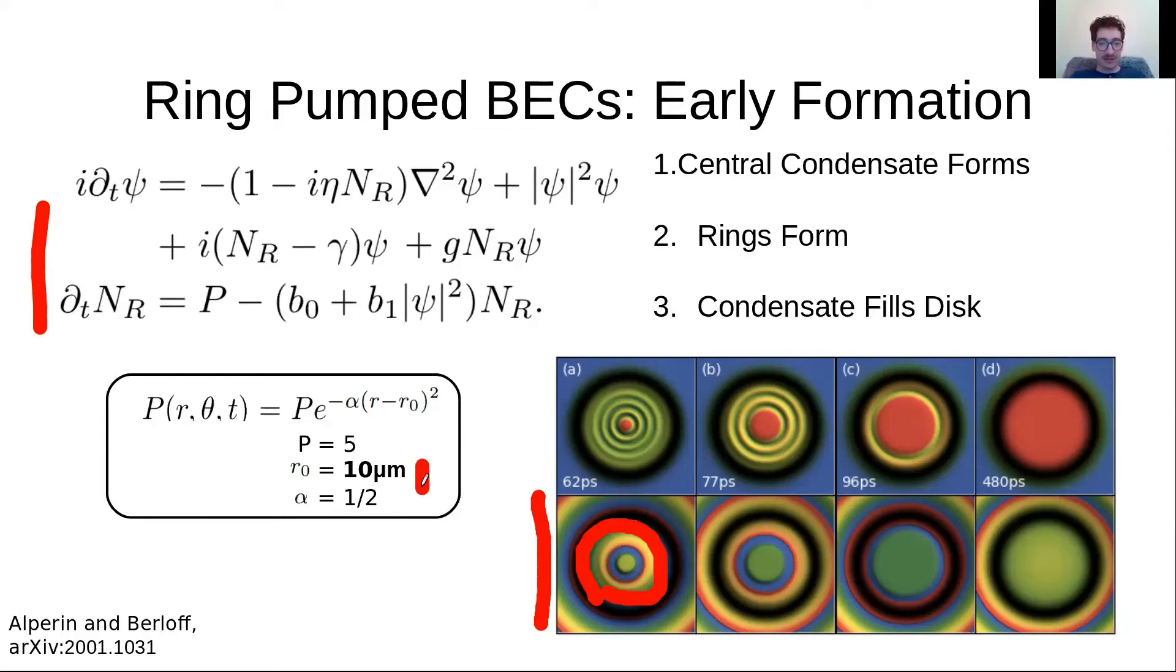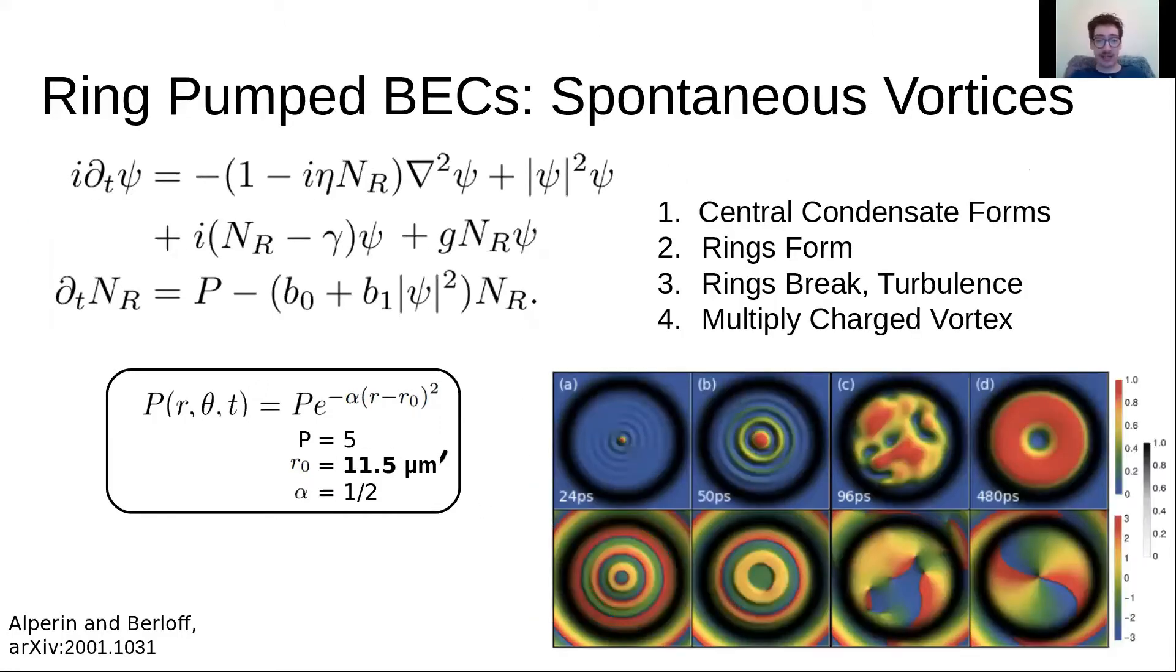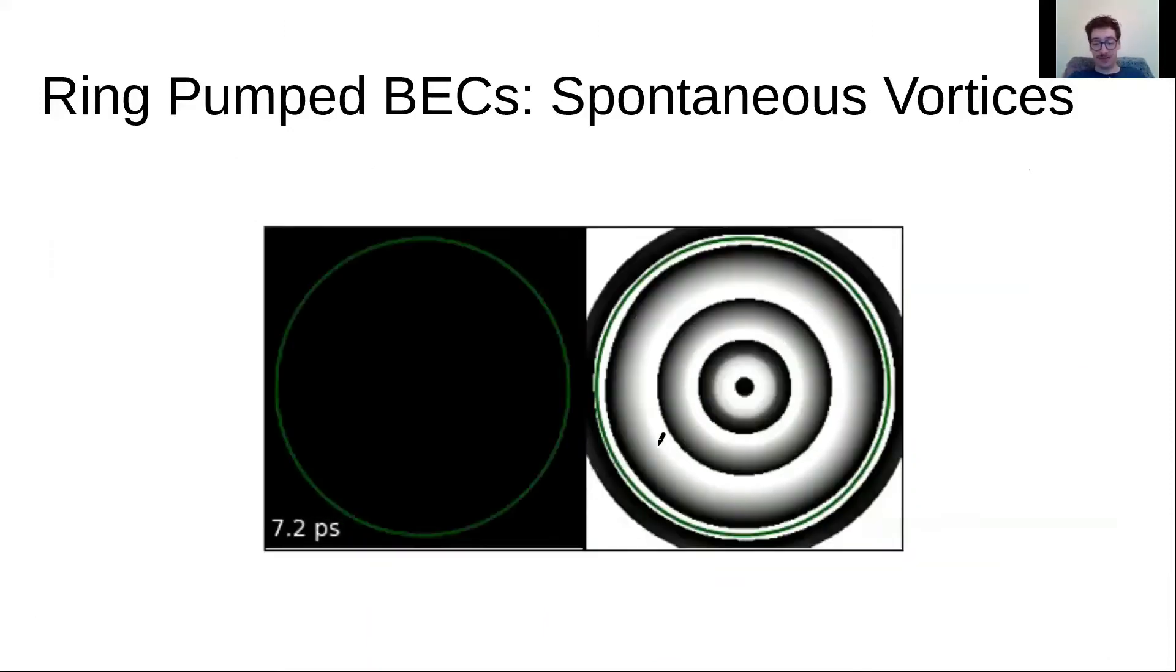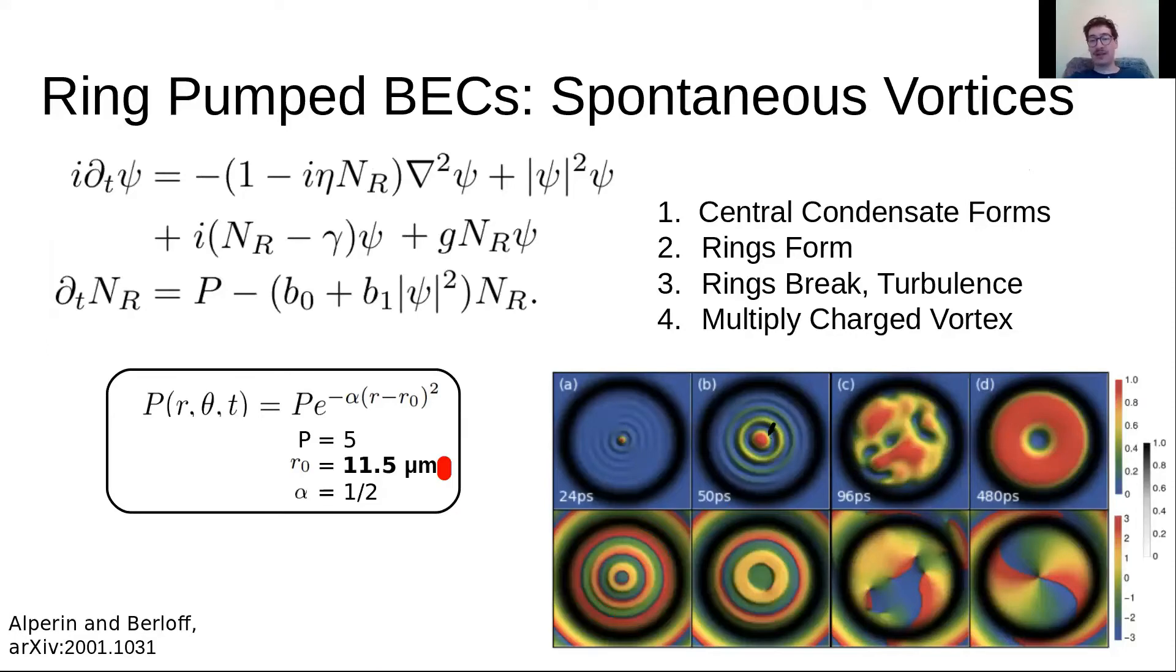Here we have a 10 micron pump radius, and so just by expanding that a little bit we can see if that causes the condensation to take a little bit longer to form, so we can maybe see these dynamics. As it turns out, just by changing this slightly, we actually do start to see these dynamics take place. You see again early formation—condensate forms in the middle with some rings—and then these actually break apart via snake instability. There's some turbulent phase which then settles stochastically into some steady state.